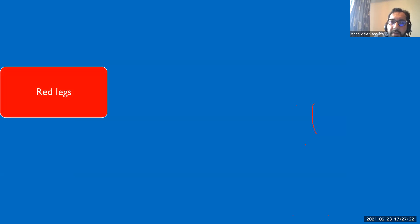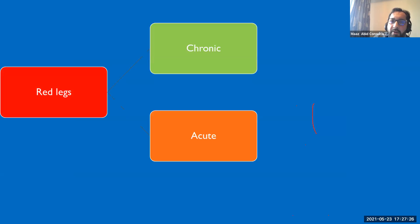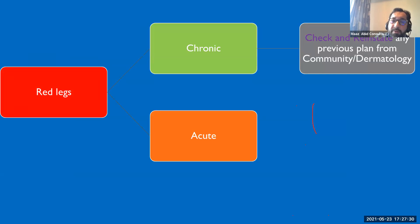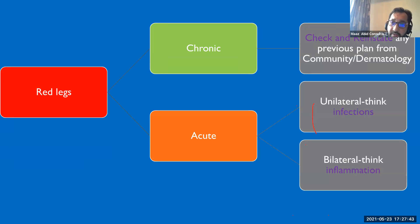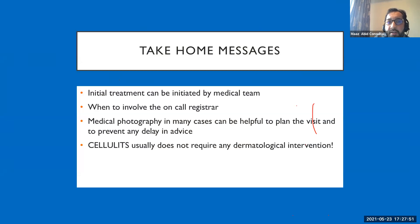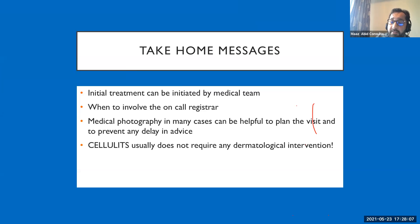In summary: for chronic red legs, check existing dermatology plans. For acute presentations — unilateral suggests infection; bilateral suggests inflammation. Initial treatment can be started by any team. Good medical photography is extremely helpful for remote dermatology advice. Remember: cellulitis is a medical condition and usually does not require dermatological intervention.